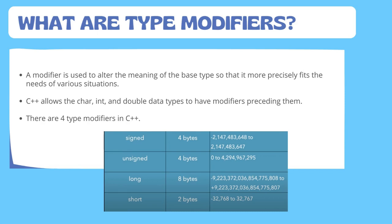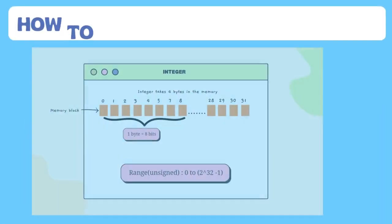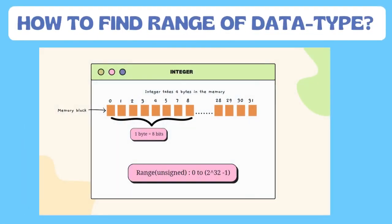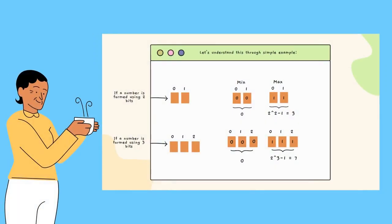Before moving ahead, let's discuss how to find the range of a data type. Consider the integer data type — it takes four bytes in memory. The smallest unit of memory is a bit, and one byte equals eight bits, so an integer occupies 32 bits (4 × 8 = 32). If we consider only positive integers, the range will be from 0 to 2 raised to the power 32 minus 1.